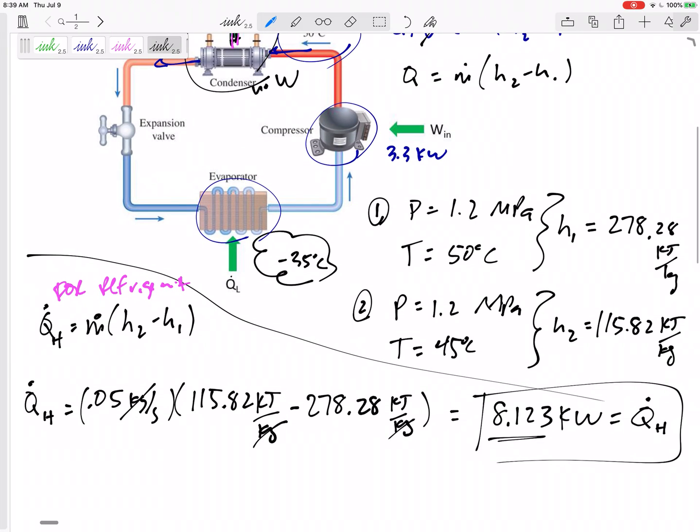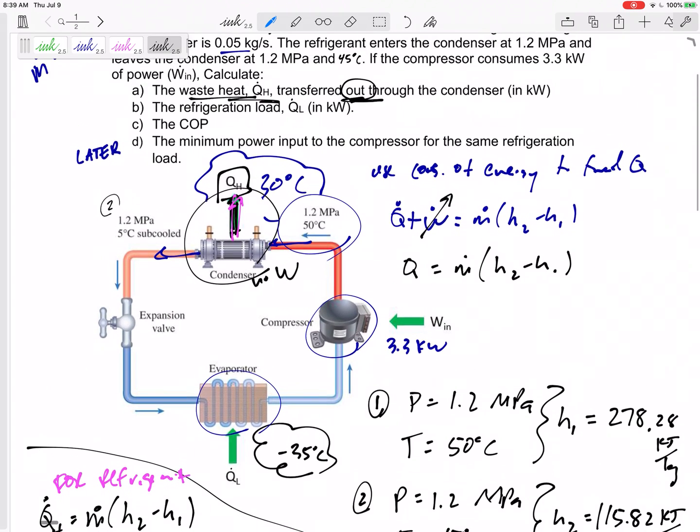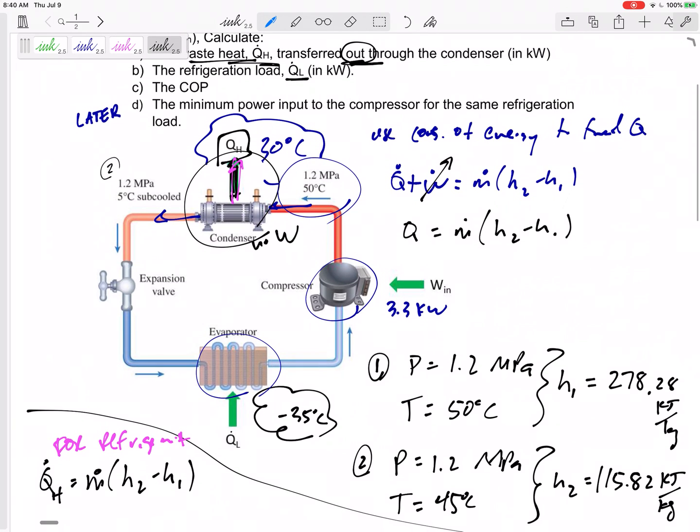So the waste heat transferred out is 8.123 kilowatts. That's the hard part. Now let's go back to all those COP is QL over W or W is QH minus QL. Let's go back to those easier equations to find the QL.